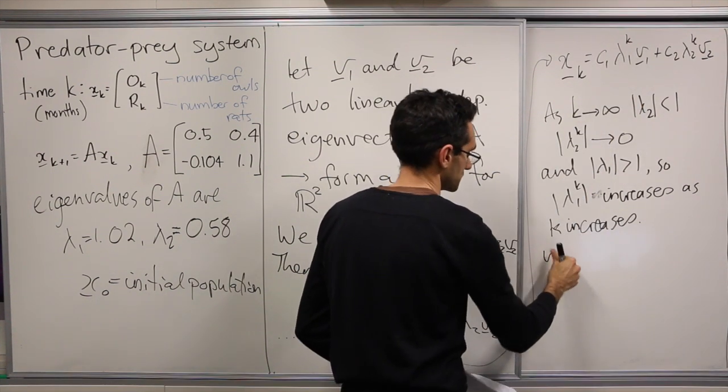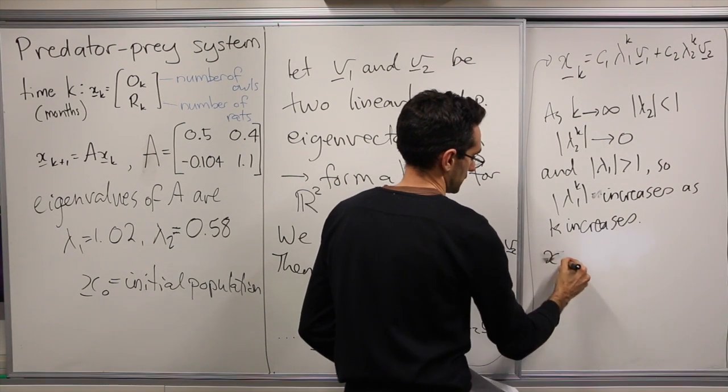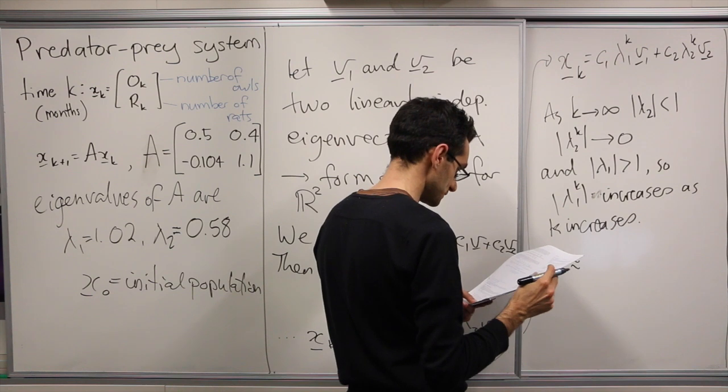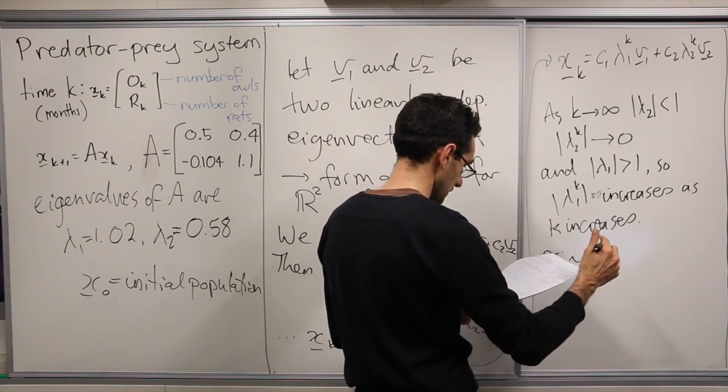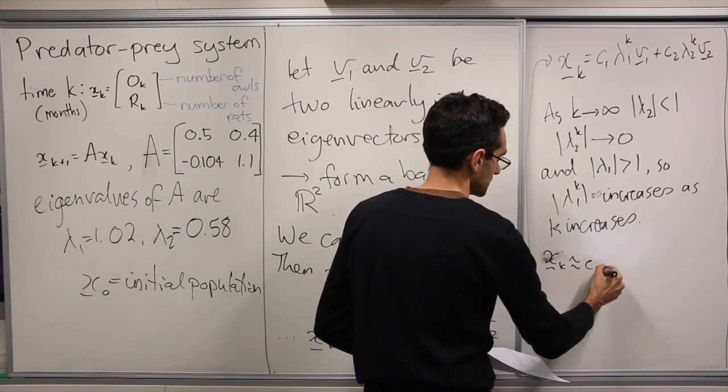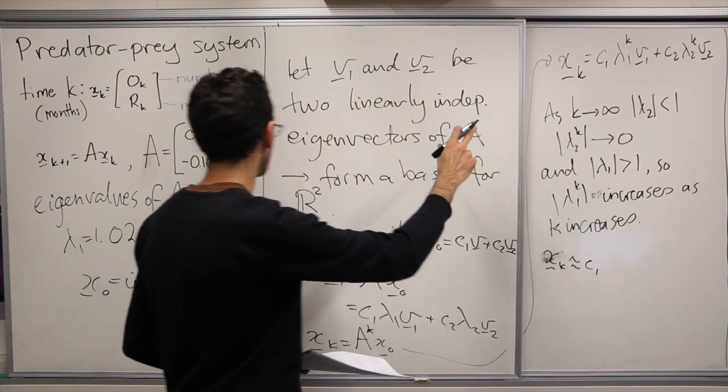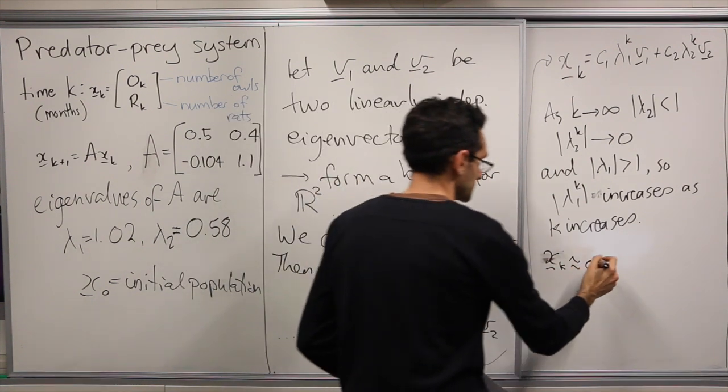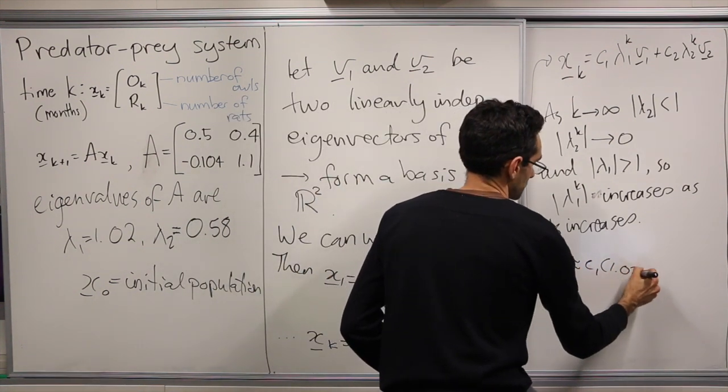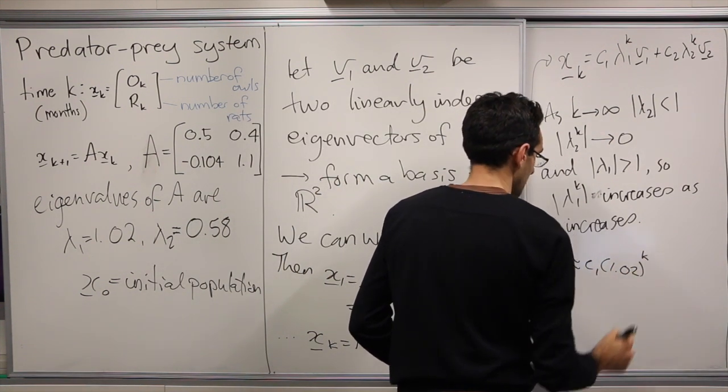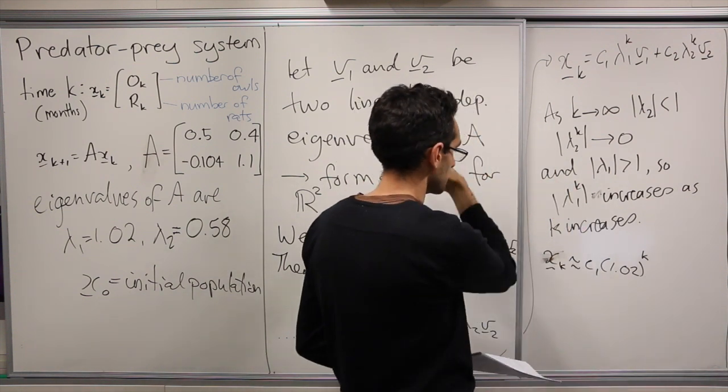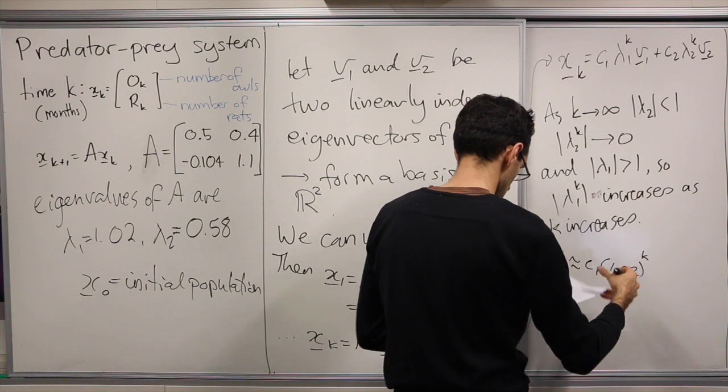We have xk is approximately equal to c1 times, now remember lambda 1 was 1.02, so c1 times 1.02^k times the initial vector x0.